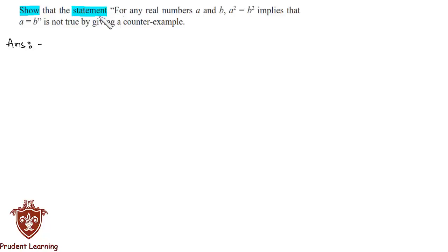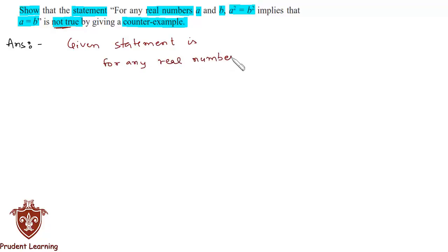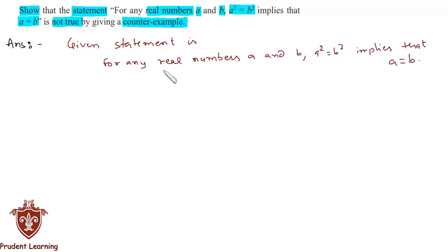Show that the statement 'for any real numbers a and b, a² = b² implies a = b' is not true by giving a counterexample. In this question we are given two real numbers a and b, and we need to show that a² = b² implies a = b is not true by giving an example. So let's begin with the solution.